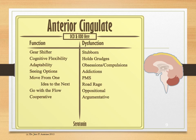The anterior cingulate. OCD, obsessive compulsive disorder, and ODD, oppositional defiance disorder, tend to live here. The anterior cingulate is responsible for your flexibility and adaptability. Those people who are stubborn, hold grudges, have addictions, who are oppositional or argumentative, tend to have dysfunction in this area of the brain. And serotonin is the major neurotransmitter of this area.